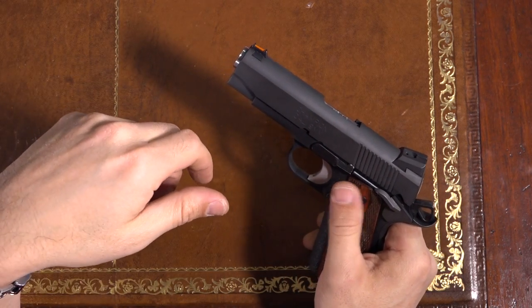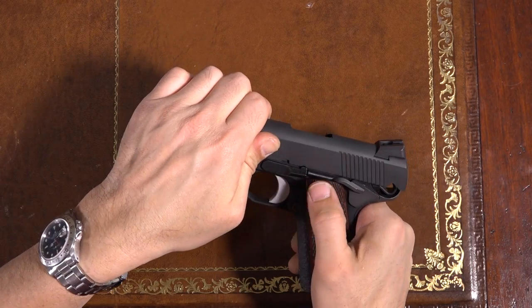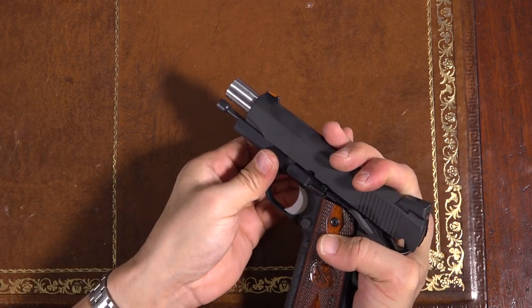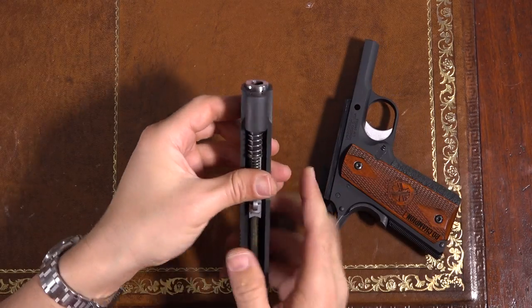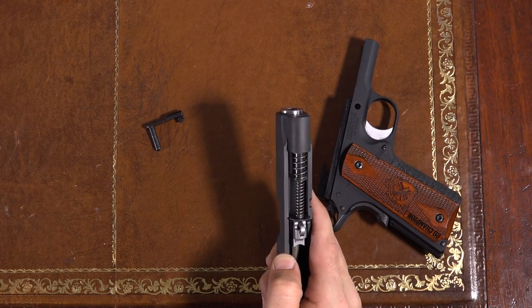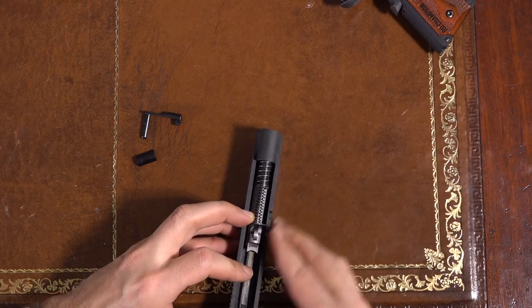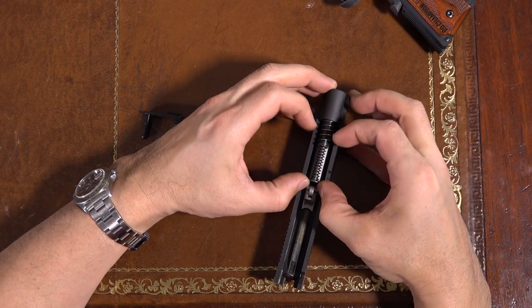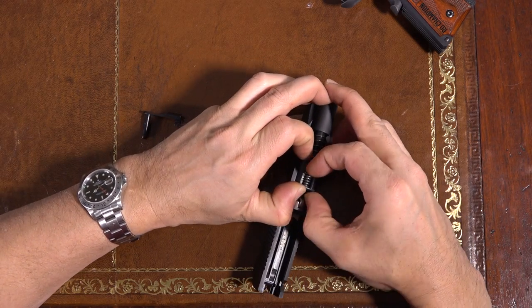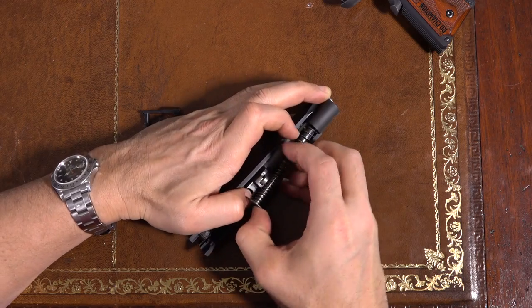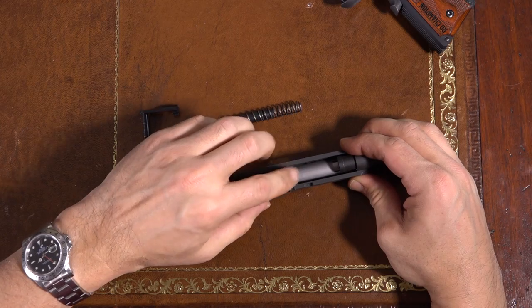So the way that I assemble and disassemble this, field strip it, is I just bring this back to this takedown notch here, so the slide stop can pop out. Pull that out, slide this off. And this is where this little clip would come in handy. If this was compressed and held compressed, it makes taking it out easier. But I can just put it on a flat surface, pinch the two pieces of the guide rod together like so, and just lift it up over the barrel bushing.